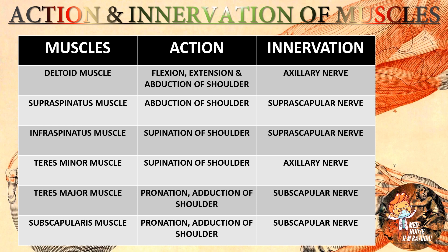The deltoid muscle action is flexion, extension, and abduction of the shoulder, innervated by the axillary nerve. Supraspinatus action is abduction of shoulder, innervated by the suprascapular nerve. Infraspinatus action is lateral rotation of shoulder, innervated by the suprascapular nerve. Teres minor action is lateral rotation of shoulder, innervated by the axillary nerve. Teres major action is pronation and adduction of shoulder, innervated by the subscapular nerve.